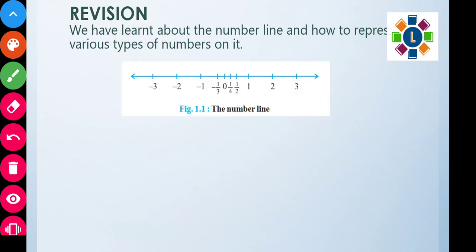On the number line, we represent numbers starting from zero. Whole numbers are zero, one, two, three, four, five and so on. Natural numbers are one, two, three and so on — they start from one.